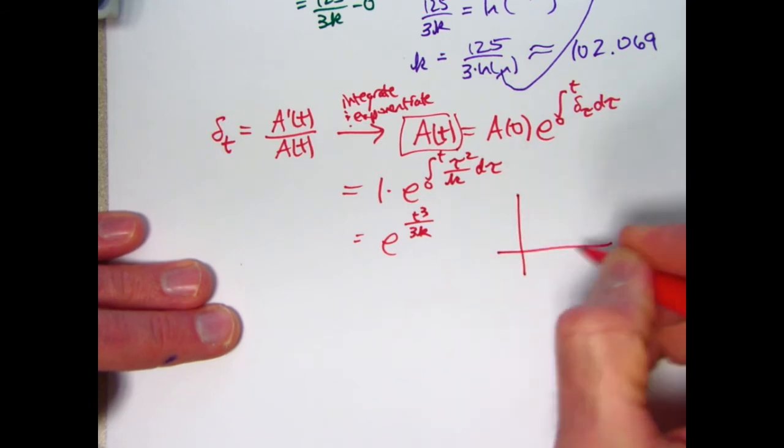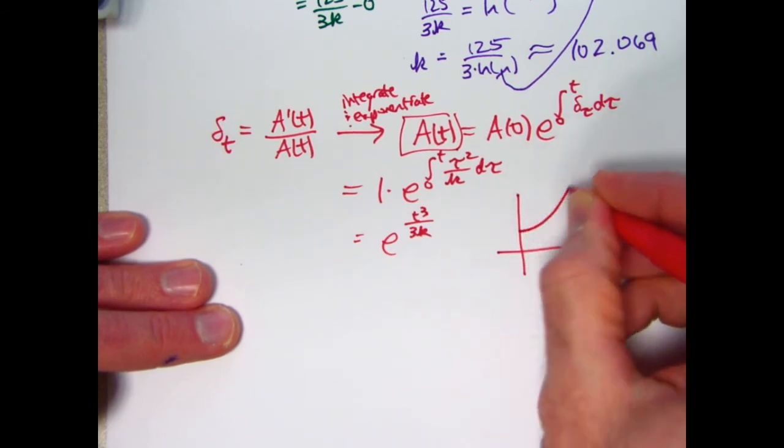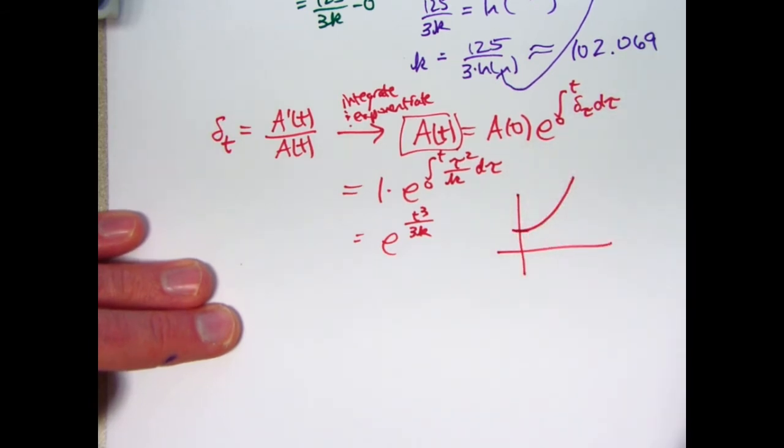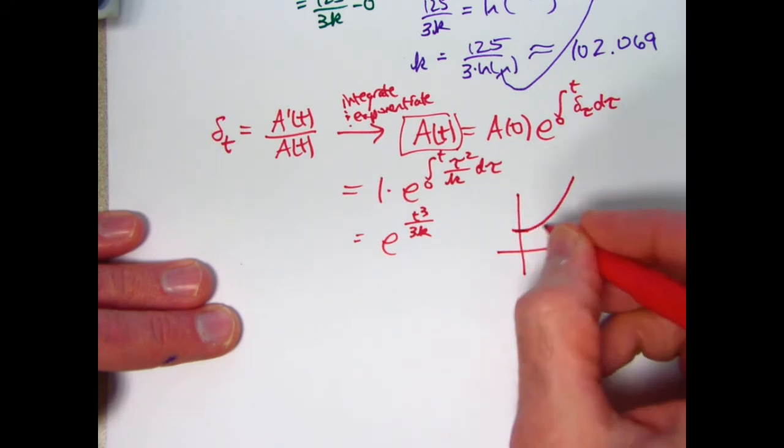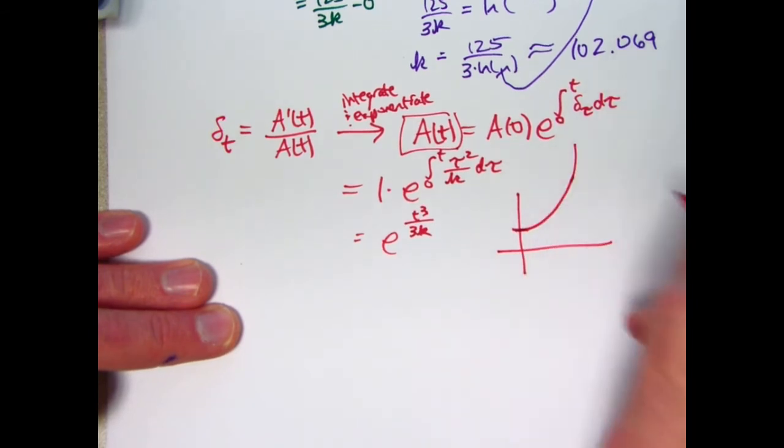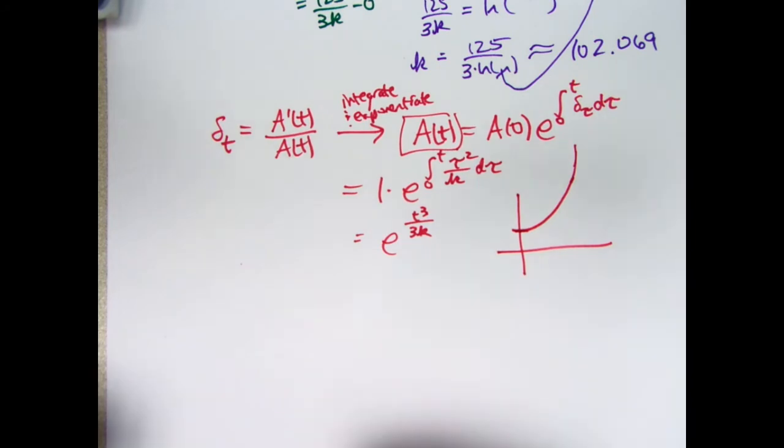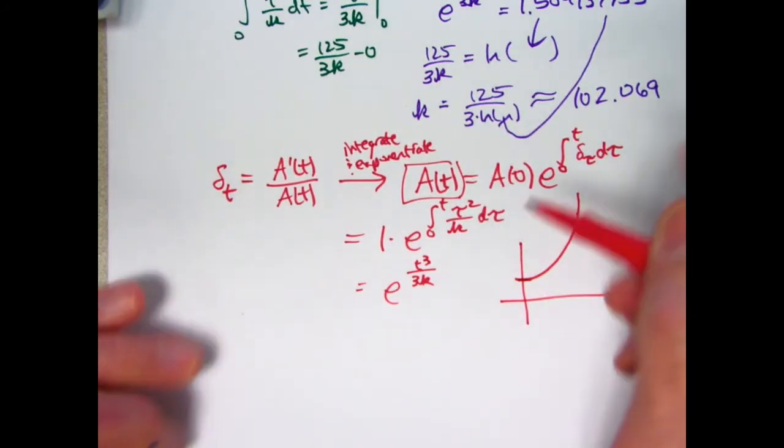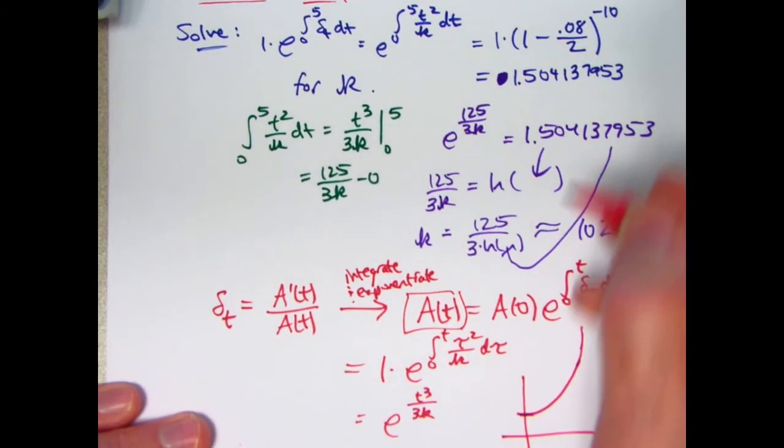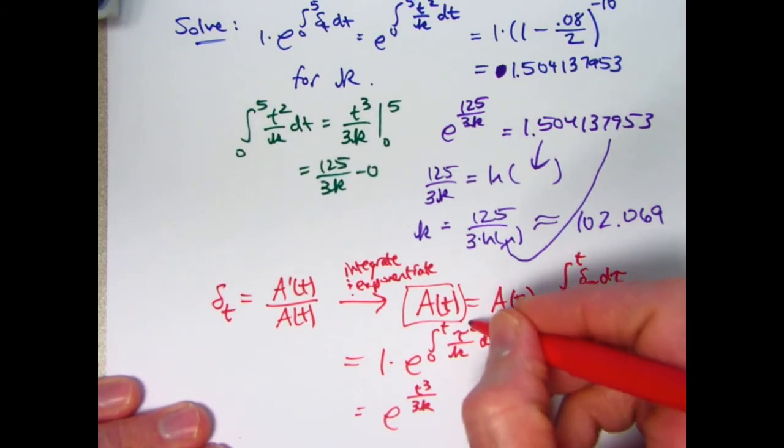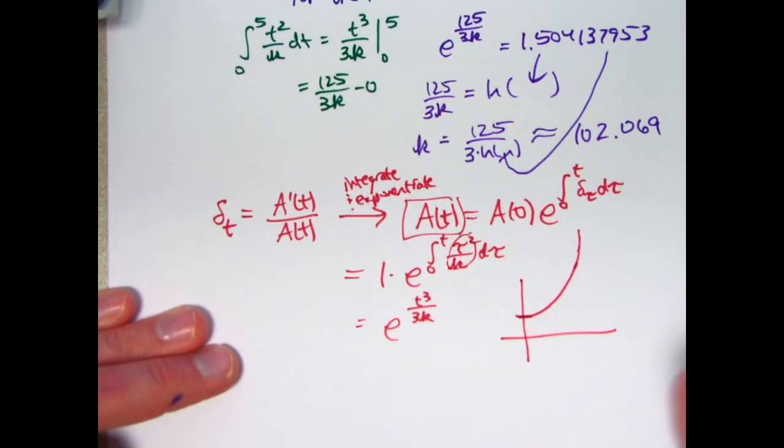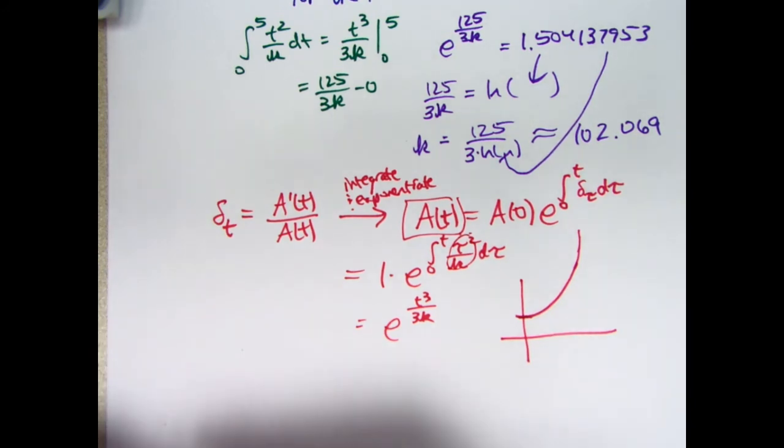If you graph it, it looks about like this. It's actually got a slope of zero initially. You can check that. But then afterwards, it grows very fast. In fact, it's going to grow faster than any regular exponential growth function. The force of interest here, t squared over k or tau squared over k, is a positive and increasing function of tau. That's going to lead to faster than exponential growth.